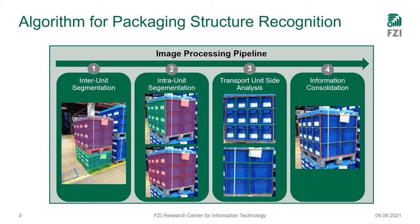In the first step of inter-unit fragmentation, we find all fully visible transport units within the image. In the second step, the intra-unit fragmentation, a crop of each of the transport units is processed separately, and for each of the transport units the two visible transport unit sides and all visible packaging unit faces are found.